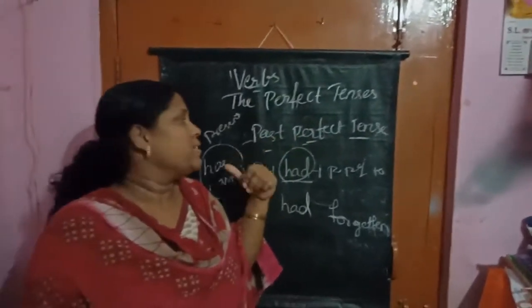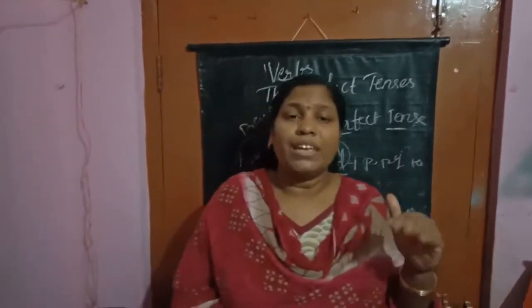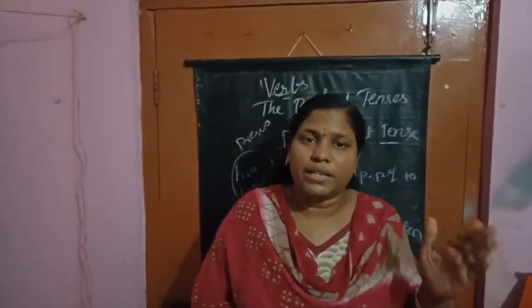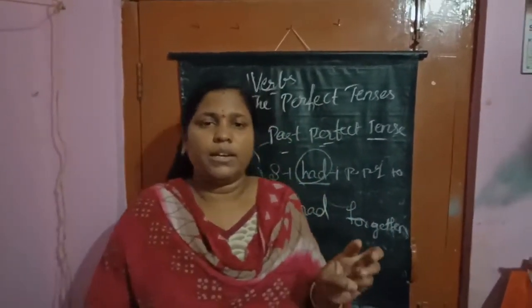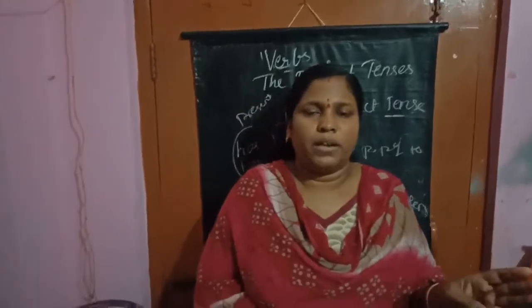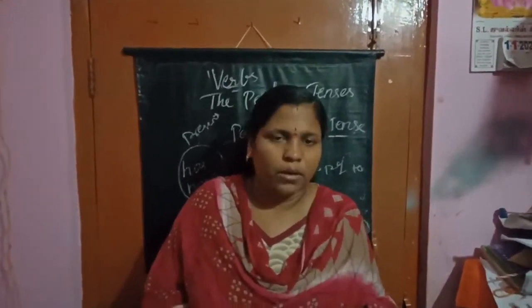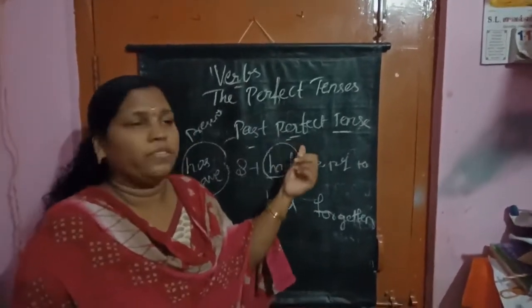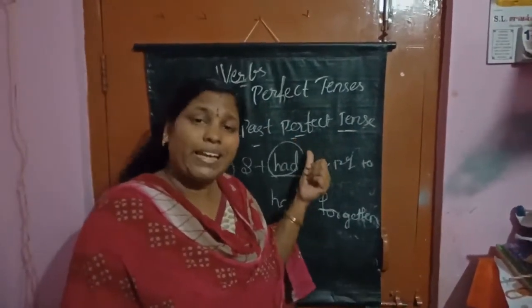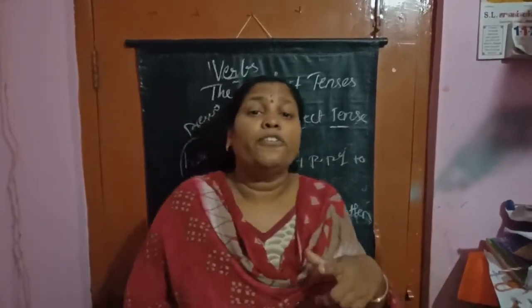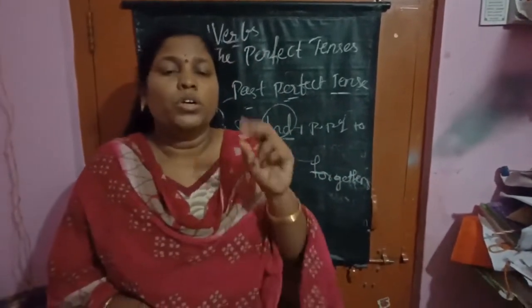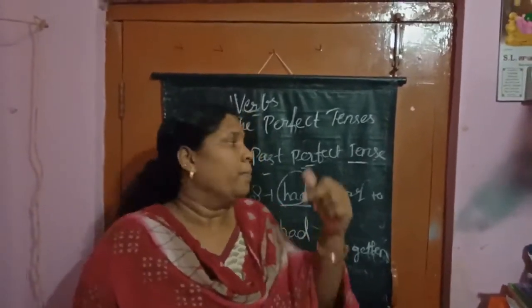Present perfect tense tells about something that started in the past and is continuing in the present, or something that happened a short time ago but is very important, or something that happened at the time of speaking but is not that important. Past perfect tense tells that one thing happened in the past before another thing happened — two things happened, both in the past, one before the other.